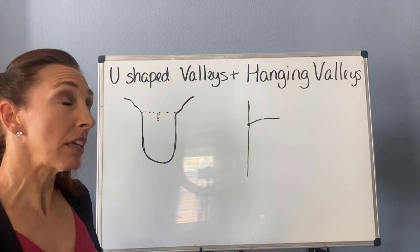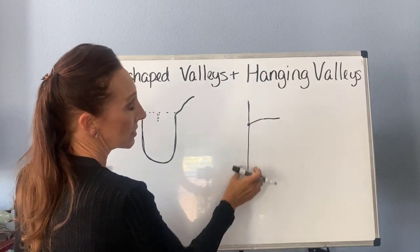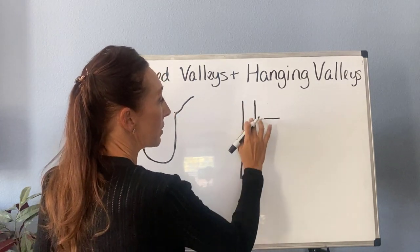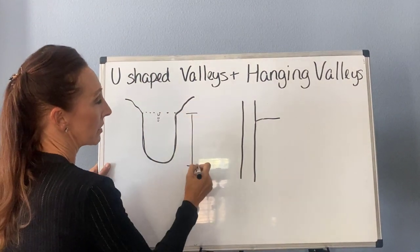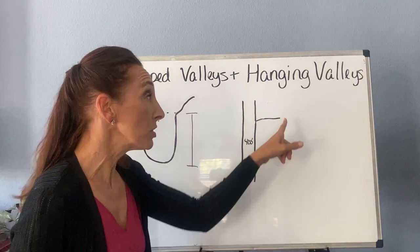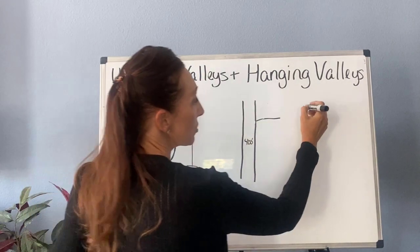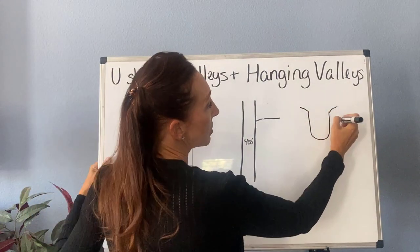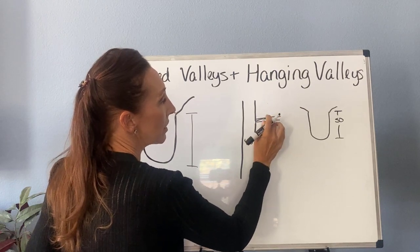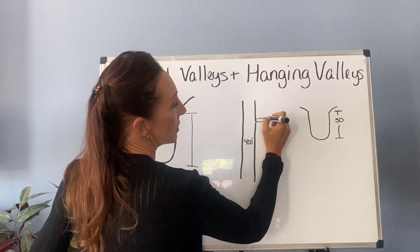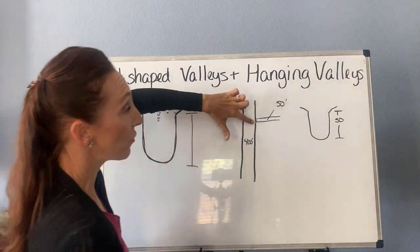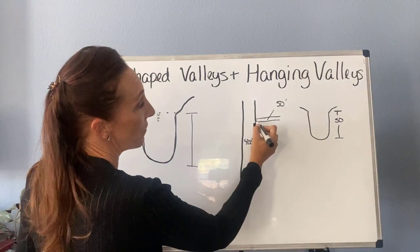With a glacier, the main trunk channel is going to be quite wide and quite deep — let's say 400 feet deep. The smaller feeder glacier, being much smaller, might only be 50 feet deep. So when the ice melts away, you're going to have this 400-foot cliff where the main glacier was, and only a 50-foot cliff where the smaller feeder glacier carved its channel.